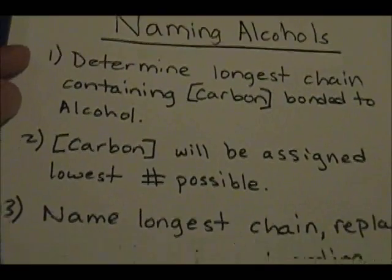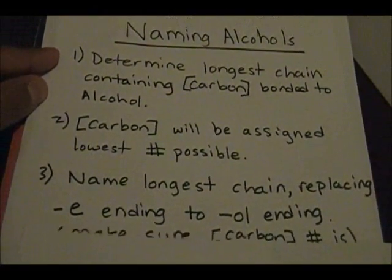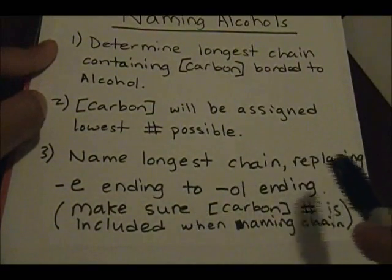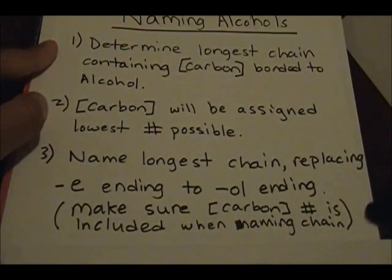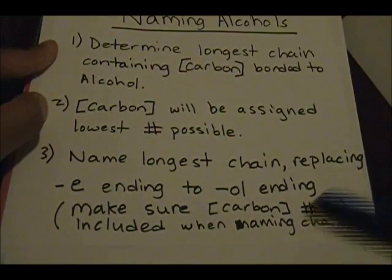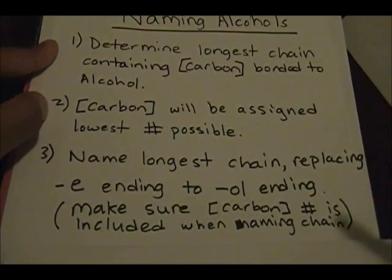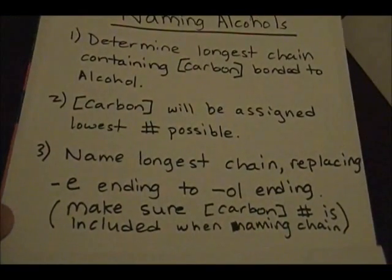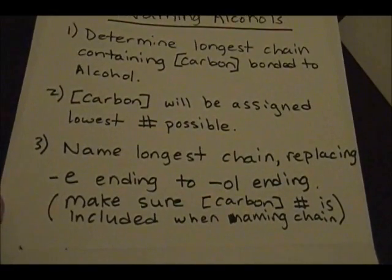The third step is you're going to name the longest chain, replacing the -e ending with an -ol ending. So if you have pentane you change it to pentanol, heptane becomes heptanol, and so on. The last part of this step is to make sure that the carbon number is included when naming the chain.